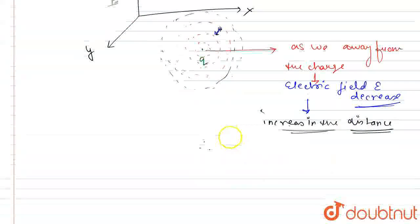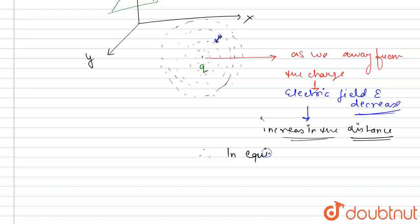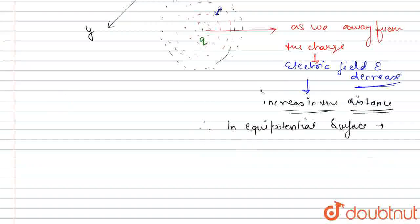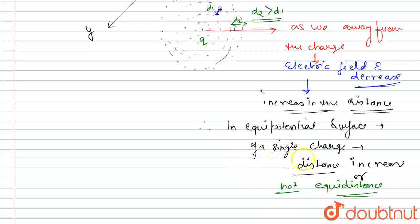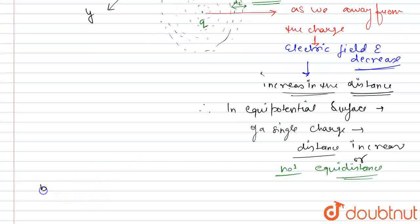This distance increases, that's the region in equipotential surfaces of a single charge. So, distance increases, or we can say not equidistance. If this is our distance d1 and this is our distance d2 so d2 is greater than that of d1. So in a equipotential surface doesn't mean that it has an equal distance. Now let's move towards part C.